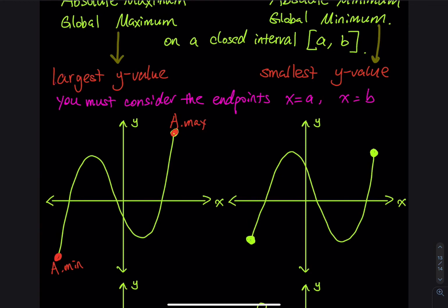What about this point and this other point? This point is still a maximum, but it is only a local maximum — it is a maximum, but not the largest y. And this point we call a local minimum; it is a minimum, but not the smallest y.